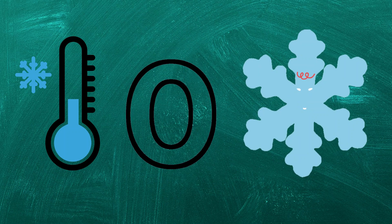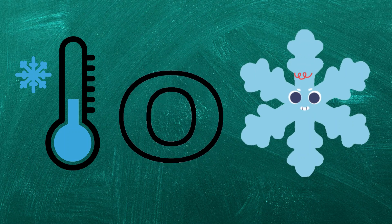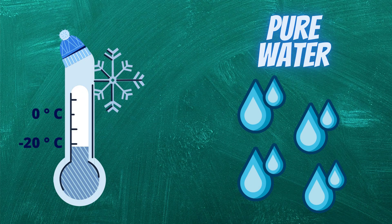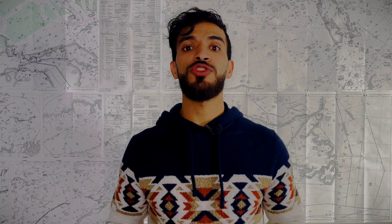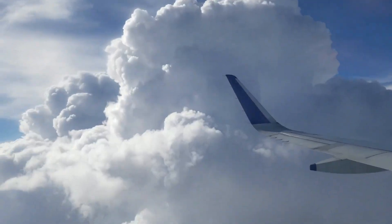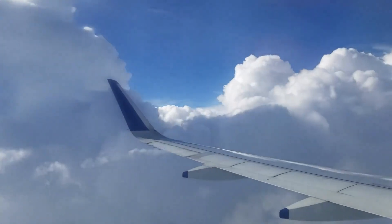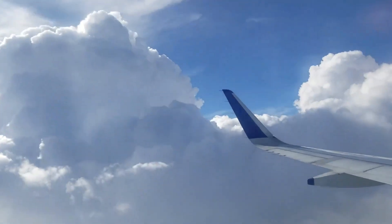Fact number two: we all know that zero degrees is the freezing point, but the water or the moisture content in the atmosphere does not freeze at zero degrees Celsius, and the reason is because it's pure still water. When the water is pure and still it maintains its liquid form well below zero degrees Celsius — it could still be water up to minus 20 degrees Celsius. When the water content is maintaining its liquid form below zero degrees Celsius we call it a super-cooled water droplet, and a super-cooled water droplet will maintain its liquid form until it's disturbed. Once you disturb it, it will freeze.